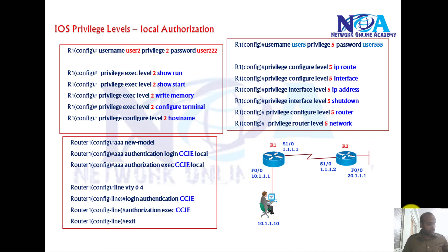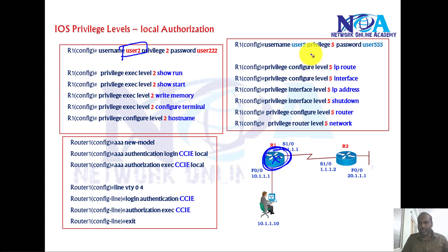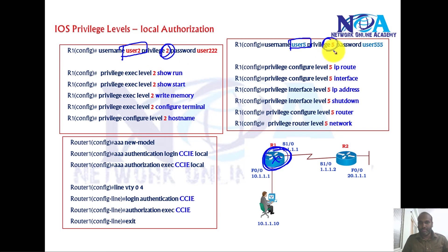In this video we'll see local authorization using privilege levels configured on the local router. I'm going to configure some privilege levels, creating two user accounts — user2 and user5 — and assigning different privilege levels: user2 will be assigned privilege level 2 and user5 will be assigned privilege level 5.